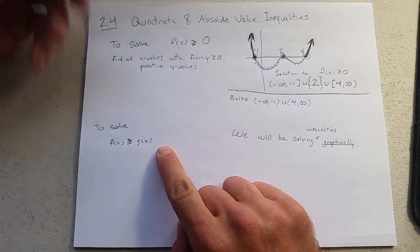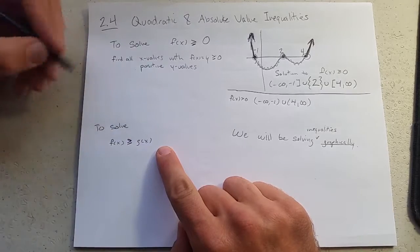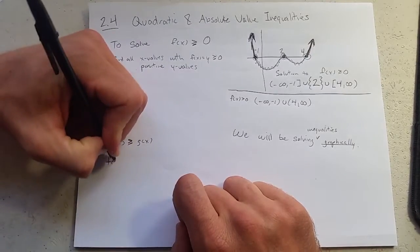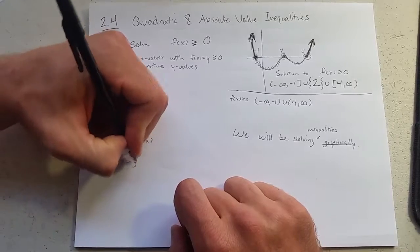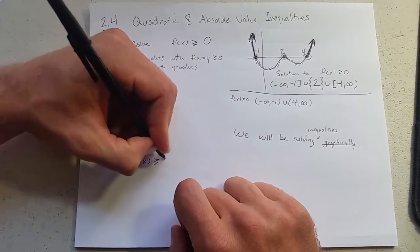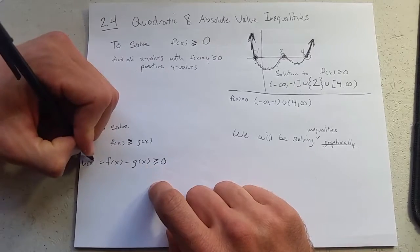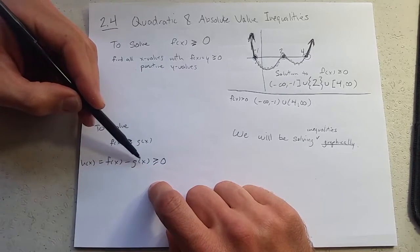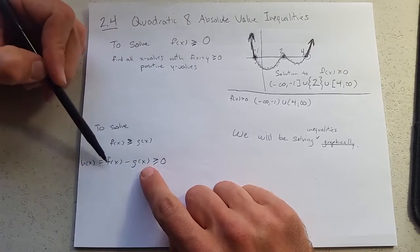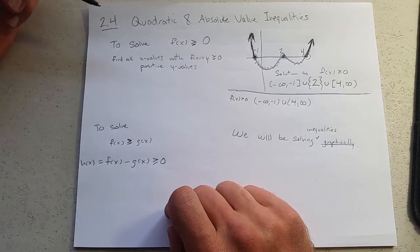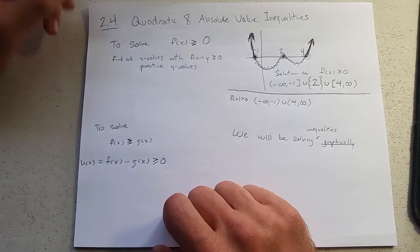If you have two functions, one function is greater than or equal to the next function, how do you solve it? A little bit of algebra. You get a new function, and we'll call this h of x. This function, you can grab this function and figure out when is it above the x-axis. And that's how we're going to solve this.